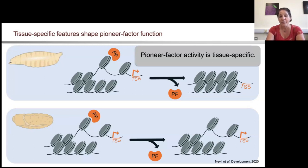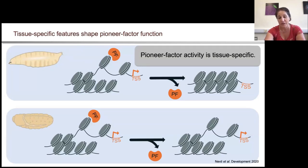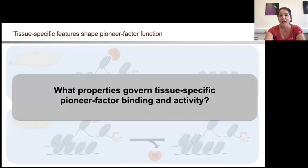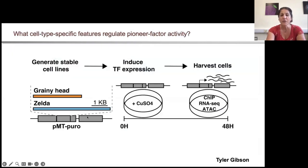Tyler Gibson in my lab wanted to investigate what can help modulate this tissue-specific activity of these pioneer factors. For this, he turned to an in vitro cell culture system in which we could exogenously add these proteins back. He used a copper-inducible system to express Grainy Head and Zelda in S2 cells where they're not normally expressed, and then he looked at binding, gene expression, and chromatin accessibility.